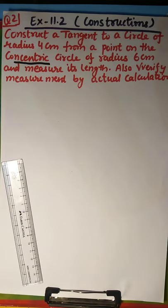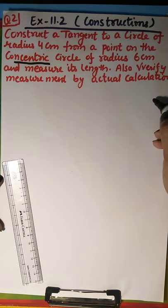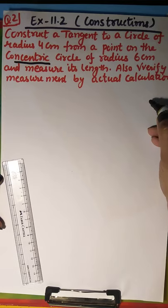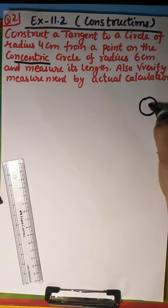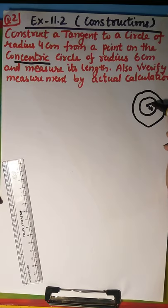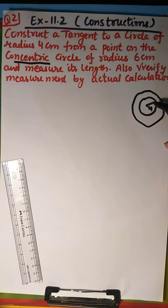So here what is the question here, what are the concentric circles? Concentric circles are those circles which have same center, like if you have a circle of radius 4 cm, so you have to keep your center here and draw a circle, which is how much is the radius? 6 cm, right? So these are the concentric circles.